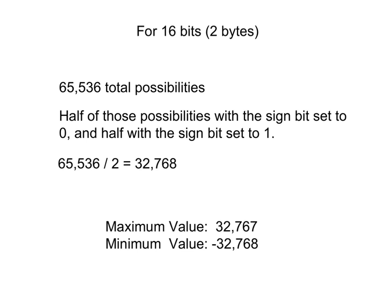Let's look at this example when we have 16 bits, which is 2 bytes. That means we have 65,536 total possibilities, of which half — meaning 32,768 — will have the signed bit set to 0, and half will have the signed bit set to 1. To figure out the maximum and minimum values, we simply take half of the total possibilities and subtract 1 to get the highest possible positive number, and take half of the possibilities and make it negative to get the minimum number.